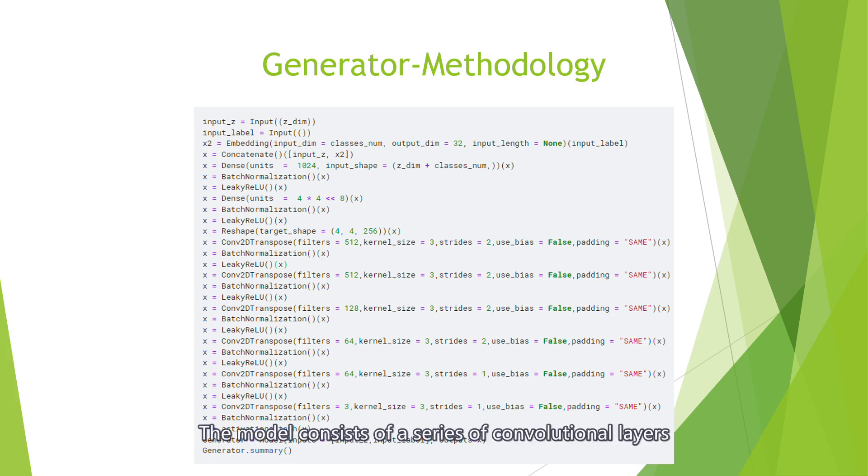The model consists of a series of convolutional layers and fully connected layers, with various batch normalization and activation layers overlapped. The model outputs a single sigmoid value.